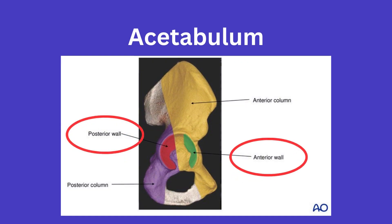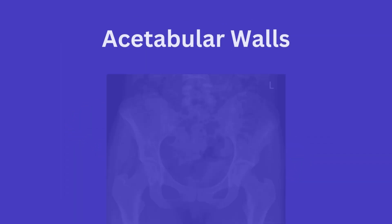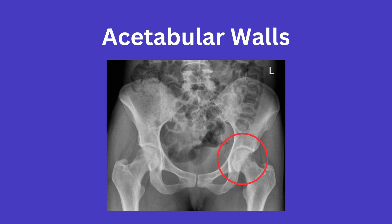Diving right in with the acetabular walls — first looking at this model of the acetabulum, you can appreciate the anterior and posterior walls of the acetabulum. Then looking at the AP pelvis here, you can see two lines running here that you can appreciate as the acetabular margins, but you may be a bit unsure as to which represents the anterior wall and which represents the posterior wall.